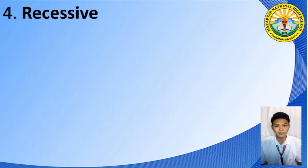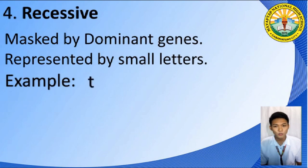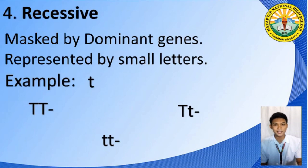The fourth thing you have to be familiar with is all about recessive. Recessive traits are masked by dominant genes and they are represented by small letters — for example, the small letter T. What if you have two capital letter T? What trait does it pertain? Or how about a combination of a capital letter T and a small letter T? What trait does it pertain?